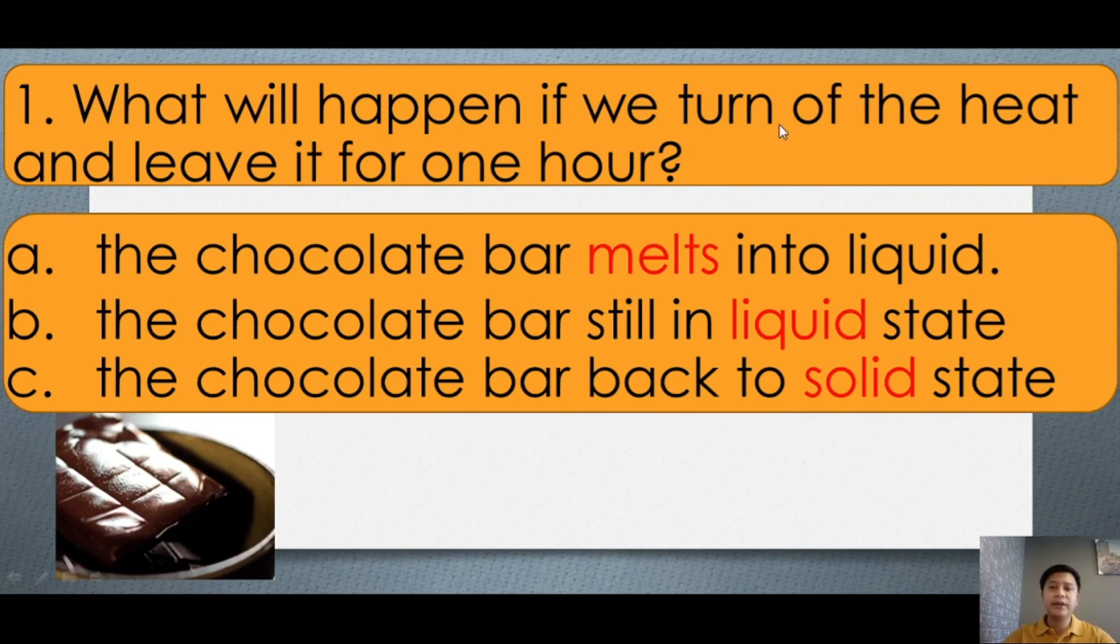What will happen if we turn off the heat and leave it for one hour? So what will happen? A, the chocolate bar melts into liquid. B, the chocolate bar is still in liquid state. Or C, the chocolate bar back to solid state. So what will happen if we turn off the heat and leave it for one hour, what will happen to the chocolate bar? So let's see, the chocolate bar back to solid state because you don't have the heat.